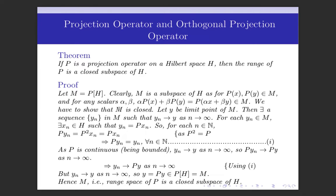Then there exists a sequence Yn in M such that Yn converges to Y as n tends to infinity. For each Yn in M, there exists Xn in H such that Yn equals P·Xn, because Yn belongs to M, so Yn is the image of some element of H. So there exists some element Xn in H such that Yn equals P·Xn.